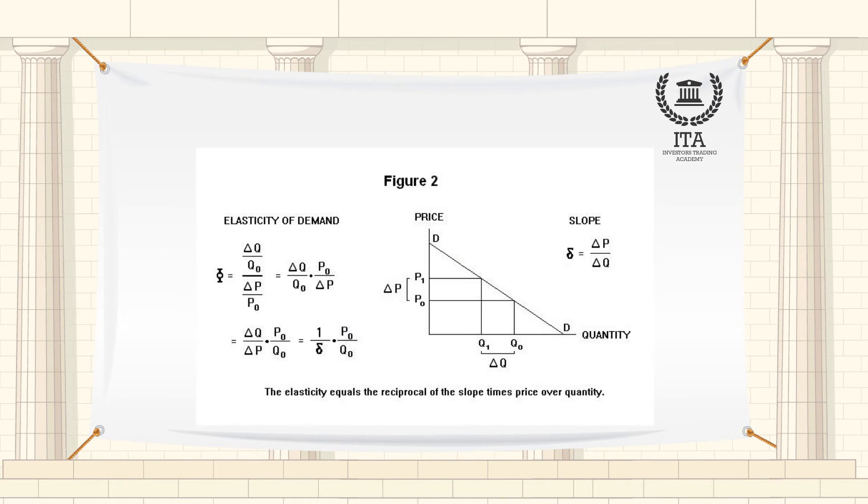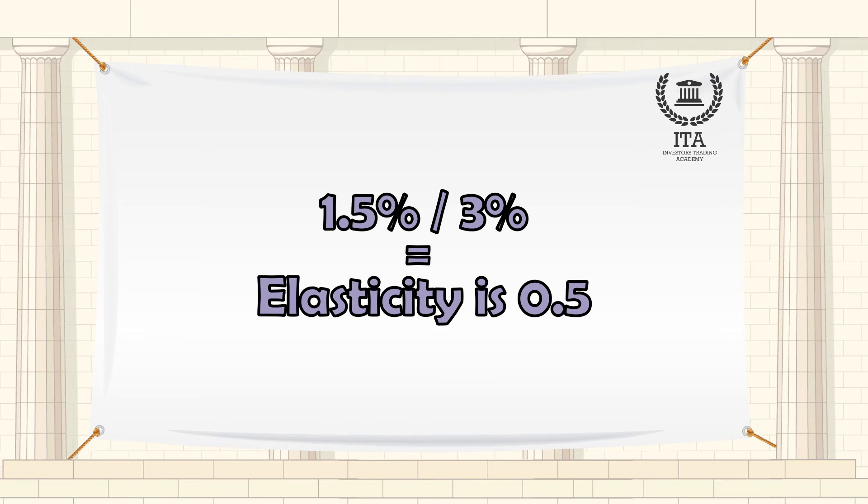Just divide the percentage change in the dependent variable by the percentage change in the independent one. If the latter increases by 3% and the former by 1.5%, this means that the elasticity is 0.5.